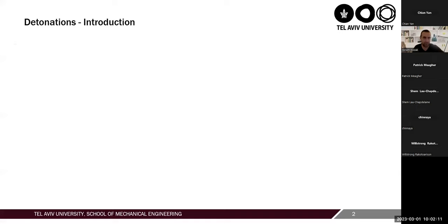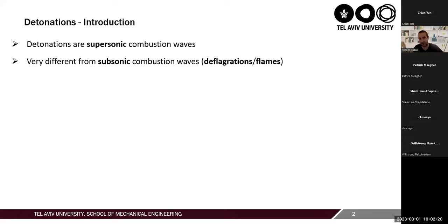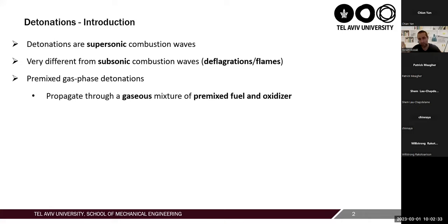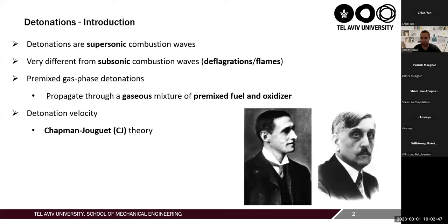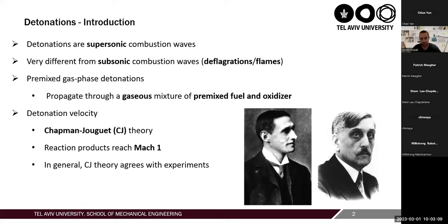A short introduction about detonations. Detonations are supersonic combustion waves — they move at a velocity much higher than the speed of sound, and they are very different from subsonic combustion waves, or deflagrations, or flames. This talk is focused on premixed gas phase detonations, meaning the detonation propagates through a gaseous mixture of premixed fuel and oxidizer. The detonation velocity is a very important property. More than a century ago, Chapman and Jouguet developed the CJ theory, in which the reaction products reach Mach 1, and we can find the detonation velocity for self-propagating detonation using thermodynamics. In general, the CJ theory agrees well with experiments.